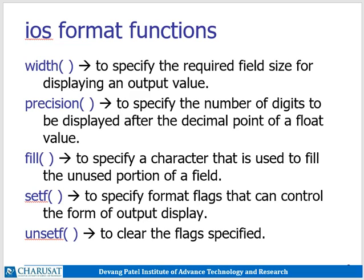The width function is used to specify the required field size for displaying an output value. The precision function specifies the number of digits to be displayed after the decimal point of a float value. For example, if precision is set to 2, then 1.432 will display as 1.43 and 1.469 will display as 1.47. The fill function is used to specify a character that fills the unused portion of a field. The setf function is used to specify format flags that control the form of output display, such as left justification or right justification.